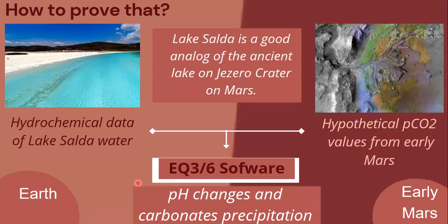To prove that and quantify how much CO2 we need to inhibit this precipitation, we consider data from Lake Salda because it is a good terrestrial analog of the ancient lake that we think existed in the past on G0 crater on Mars, where some hydrous carbonates have been identified too.